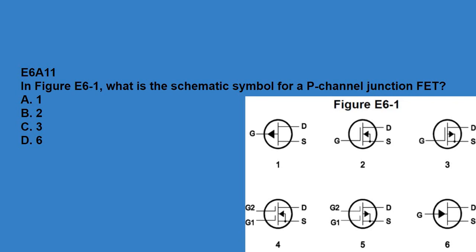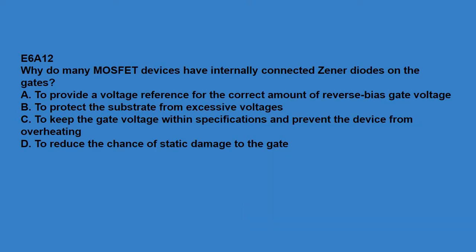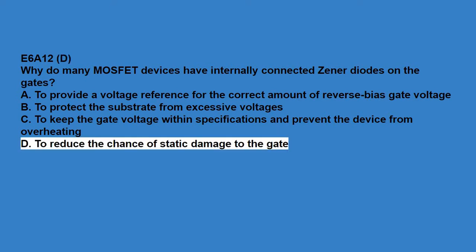E6A11: in figure E6-1, what is the schematic symbol for a P-channel junction FET? Answer is 1. E6A12: why do many MOSFET devices have internally connected zener diodes on the gates? To reduce the chance of static damage to the gate.